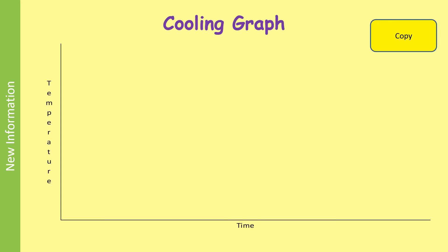And you can also do this process in reverse, and we call that a cooling graph. So this time you start with a gas and you gradually remove some energy. And as you do so, the temperature starts to fall.